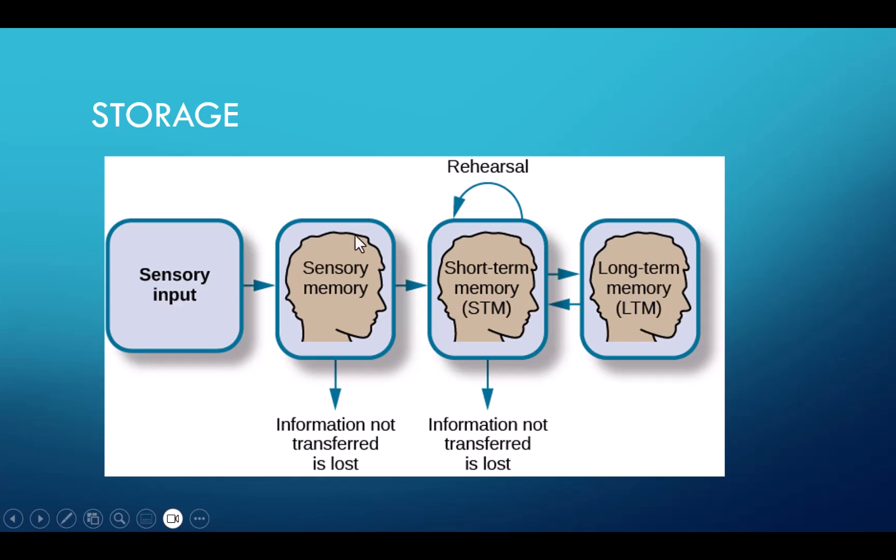So incoming sensory input goes into the sensory memory. If we don't attend to it, that information is not transferred and it's lost. If we attend to it, we get it in short-term memory. Short-term memory, again, we have to rehearse that information, we have to attend to it and encode it in some way. If we don't get it into long-term memory, that information is going to be lost. When we get information into long-term memory, it's theoretically stored there indefinitely. So we're going to go through each one of these boxes.